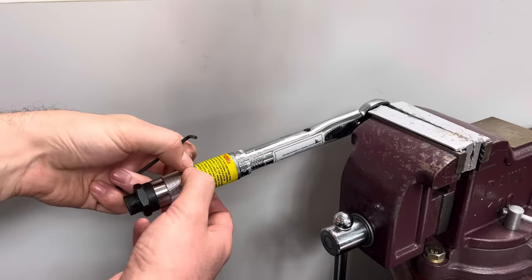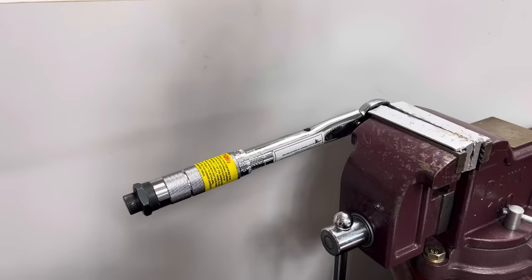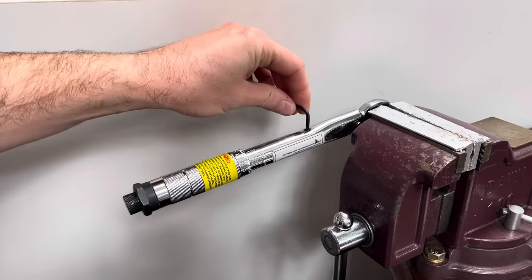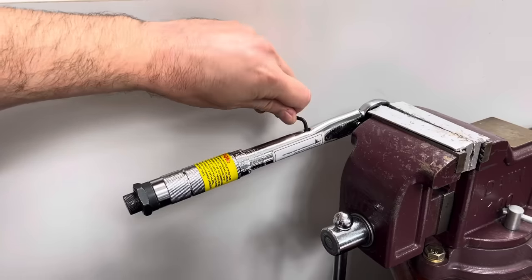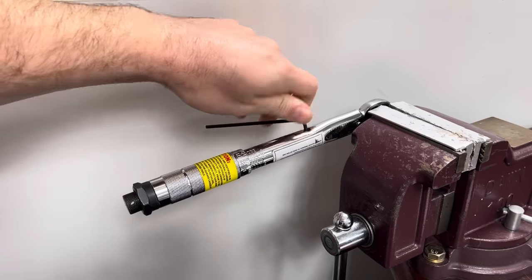In this case, it clicked before we applied all the weight. That means it's clicking too early, and that we need to turn this anti-clockwise, and I'm going to go in about a quarter of a turn, like so.